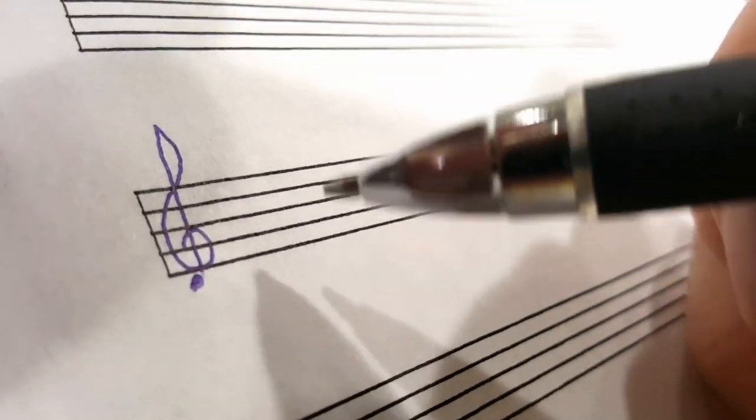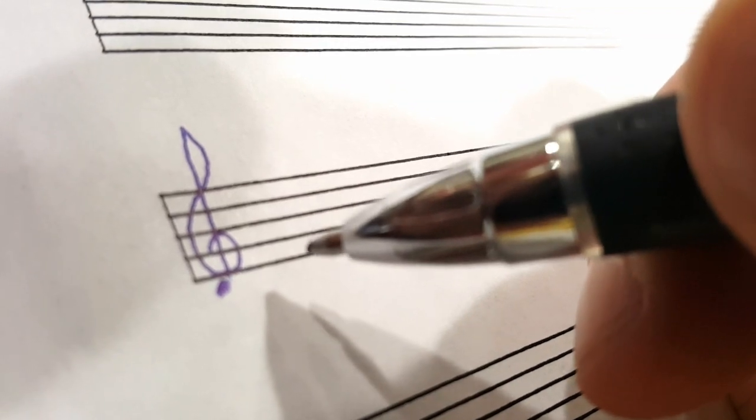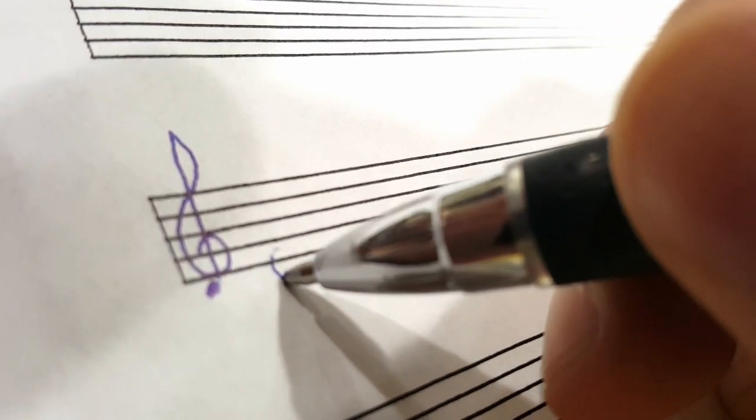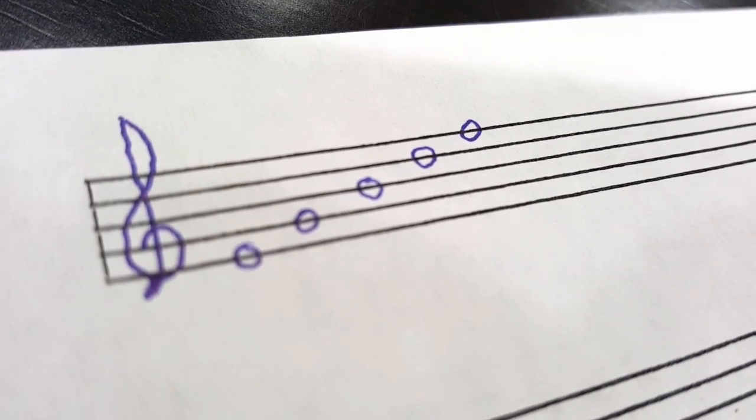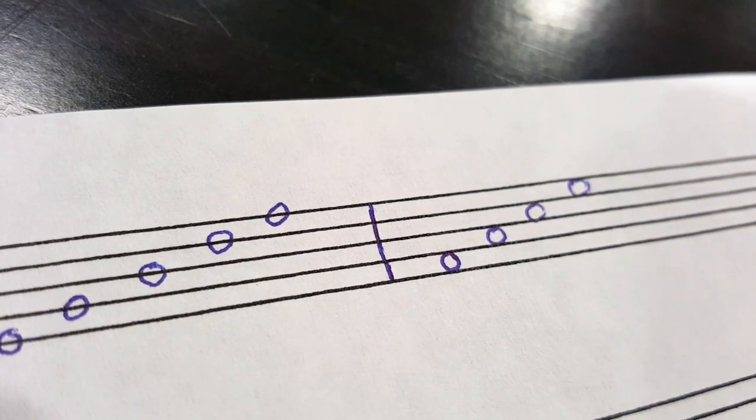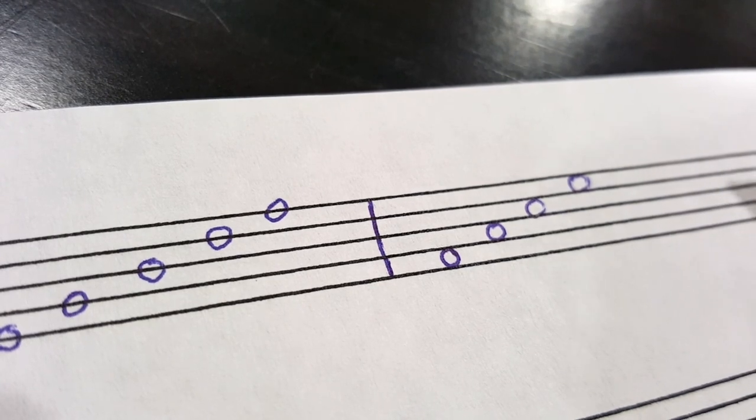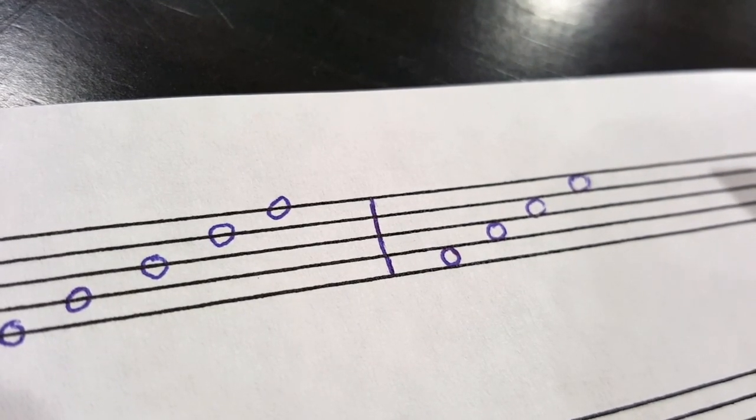Let's draw some notes on a line. Here are some whole notes on a line, and here are some whole notes to the right that are on a space. Notice that the circle is in between the two lines going up.